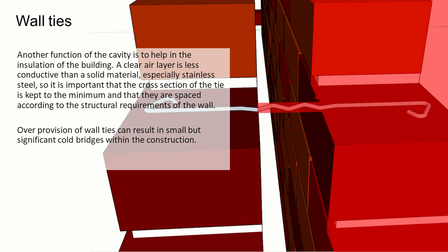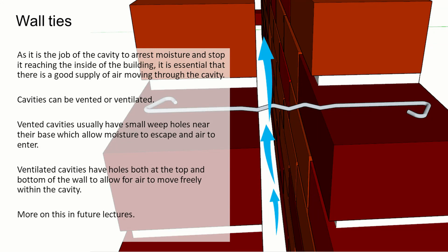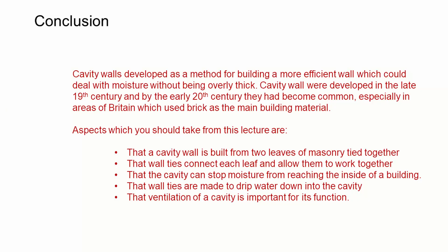Another function of the cavity is to help with the insulation of the building. A clear air layer is less conductive than a solid material, especially stainless steel, so it's important that the cross-section of the tie is kept to a minimum and they are spaced according to the structural requirements of the wall. Putting too many wall ties in can result in small but significant cold bridges within the construction. Cavities can be vented or ventilated: vented cavities usually have small weep holes near their base which allow moisture to escape and air to enter, while ventilated cavities have holes at both the top and bottom to allow free movement of air within the cavity.